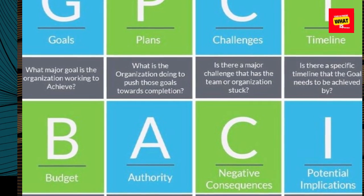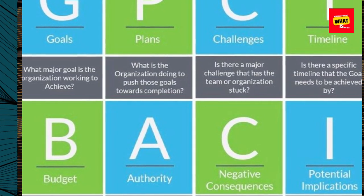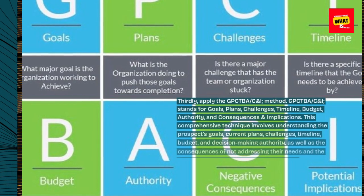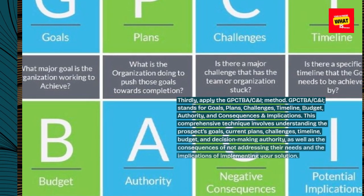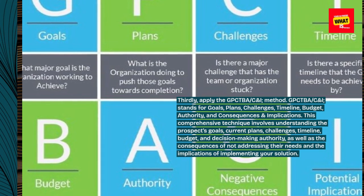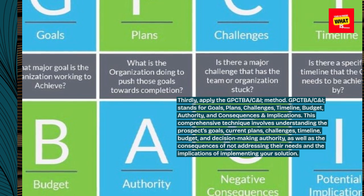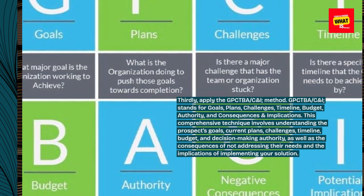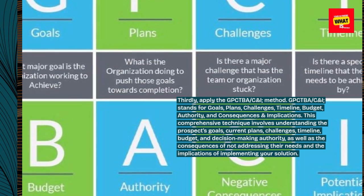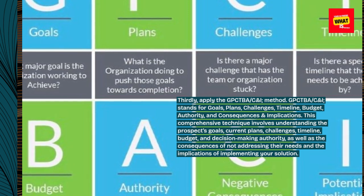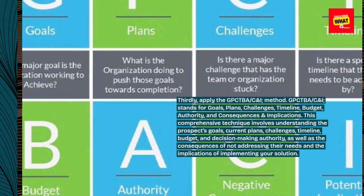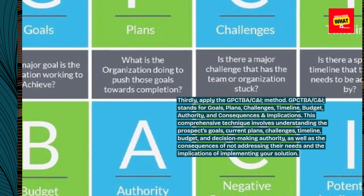This approach focuses on addressing the prospect's pain points and aligning your solution accordingly. Thirdly, apply the GPCTBA-CNI method. GPCTBA-CNI stands for goals, plans, challenges, timeline, budget, authority, and consequences and implications. This comprehensive technique involves understanding the prospect's goals, current plans, challenges, timeline, budget, and decision-making authority, as well as the consequences of not addressing their needs and the implications of implementing your solution.